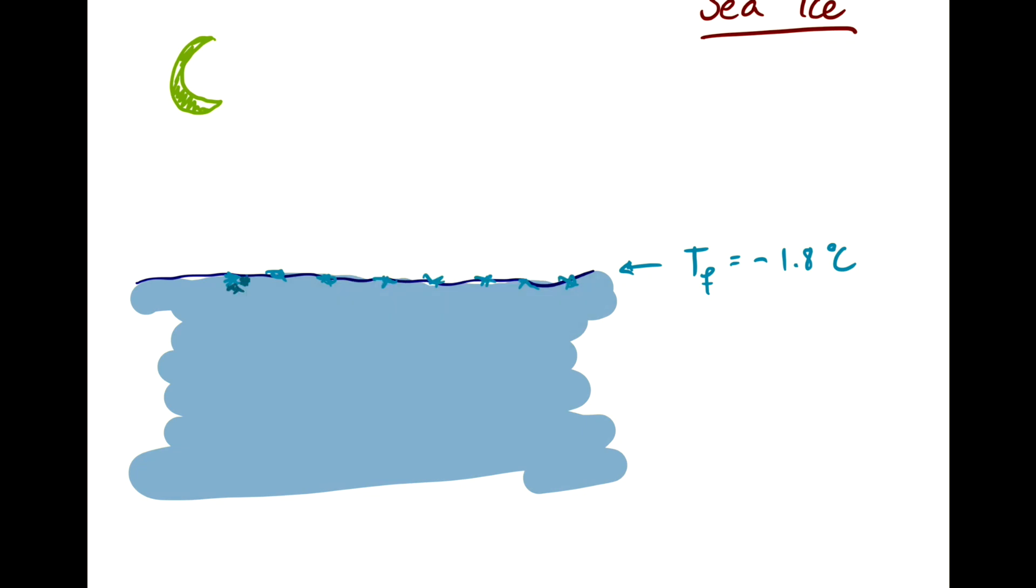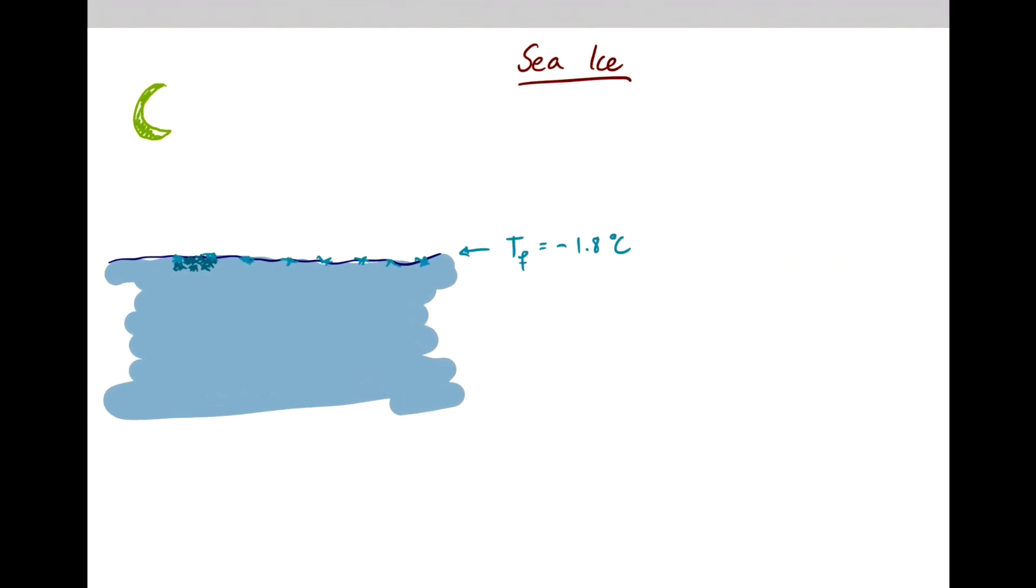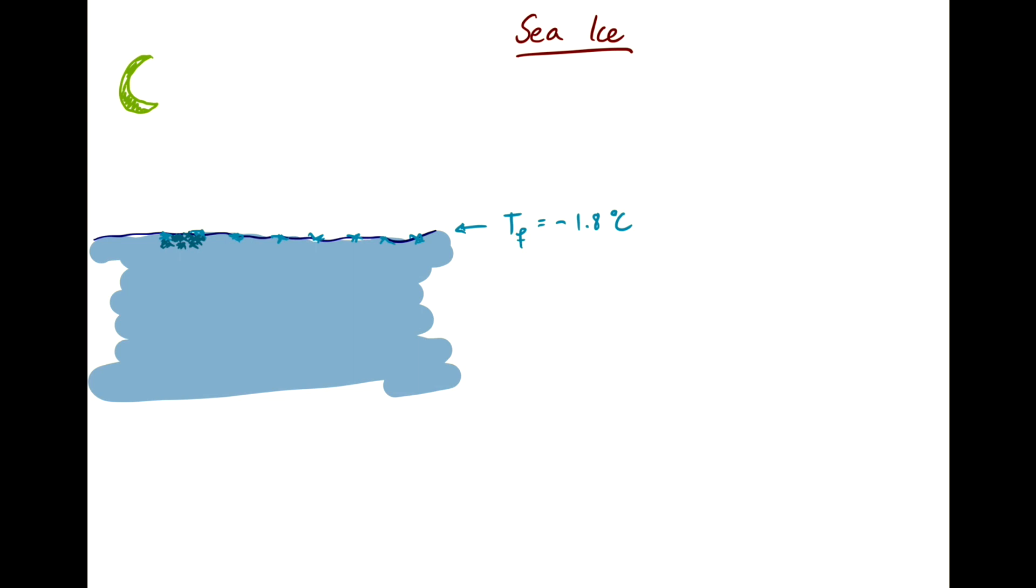You start freezing water in little crystals from underneath to the base of the ice over time. And initially this might look like a very thin layer of very dark ice, because it's kind of transparent still.